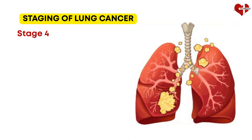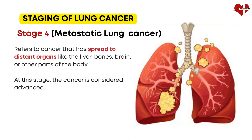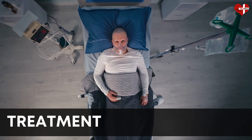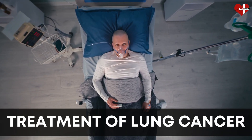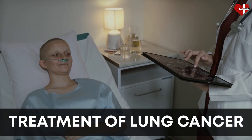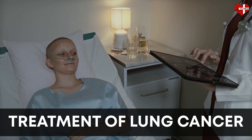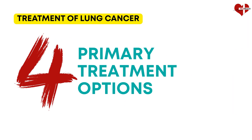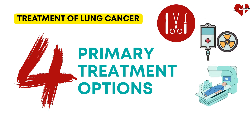Stage 4, also known as metastatic lung cancer, refers to cancer that has spread to distant organs like the liver, bones, brain, or other parts of the body. At this stage, the cancer is considered advanced. Lung cancer is a serious and complex disease that requires a multi-faceted approach to treatment. There are several different treatment options available, each with its own set of benefits and considerations. The four primary treatment options for lung cancer are surgery, chemotherapy, radiation therapy, and targeted therapy.